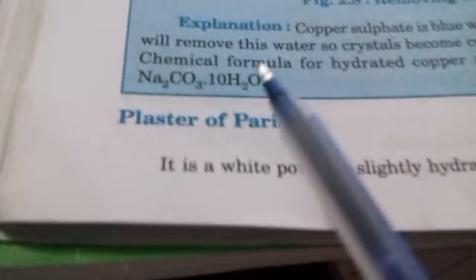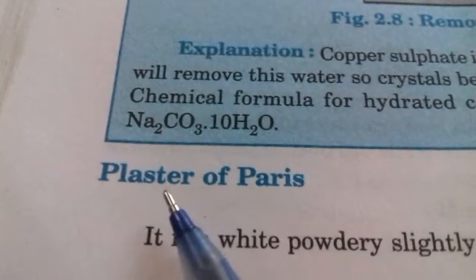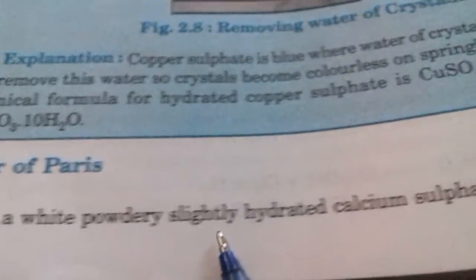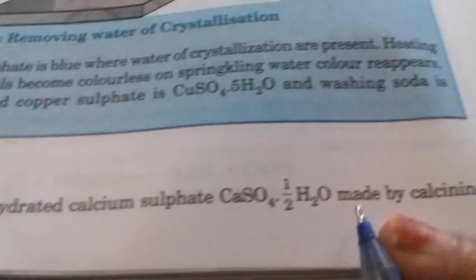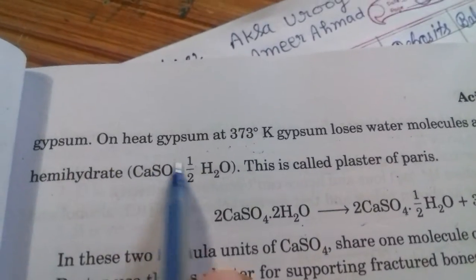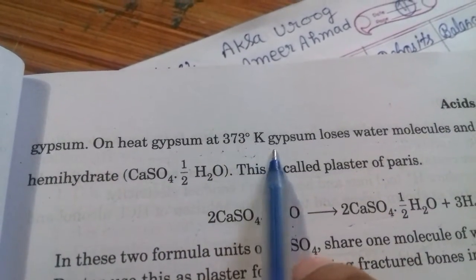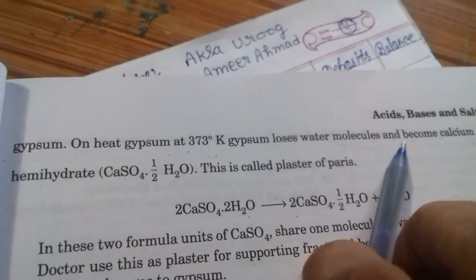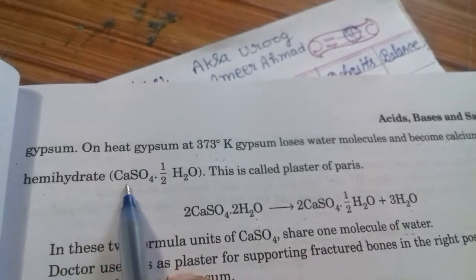Now let us revise this topic. Plaster of Paris is a white powdery, slightly hydrated calcium sulfate made by calcining gypsum. On heating gypsum at 373 Kelvin temperature, gypsum loses water molecules and becomes calcium sulfate hemihydrate.